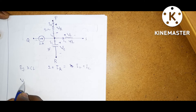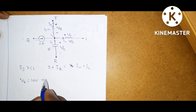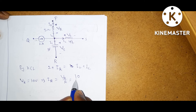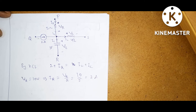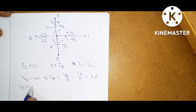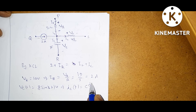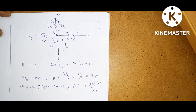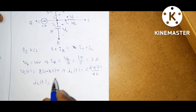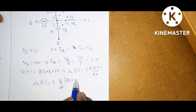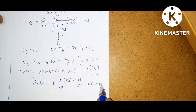In the problem, Vr equals 10 volts. What is IR? According to Ohm's law, IR equals Vr by R, which is 10 by 5, giving 2 amperes. Now Vc(t) is given as 8 sin 2t volts. From this, IC(t) is equal to C times dVc(t)/dt. IC(t) equals — C value is 1 farad — d/dt of 8 sin 2t. If you differentiate this, you get 16 cos 2t.